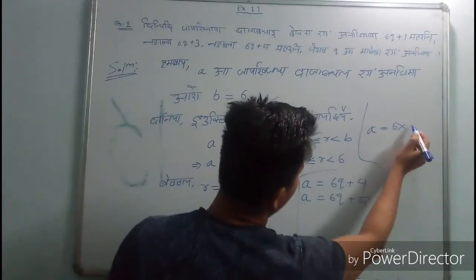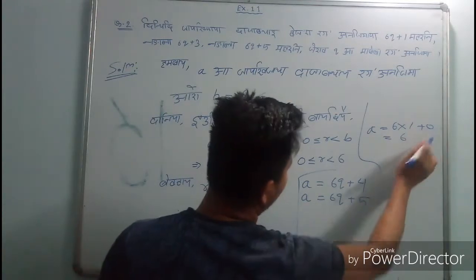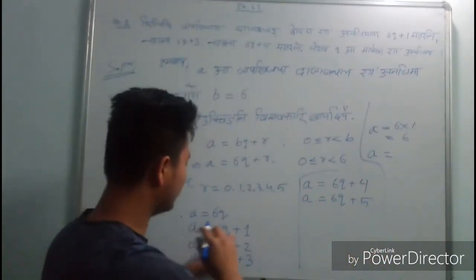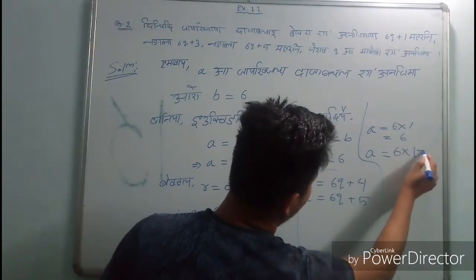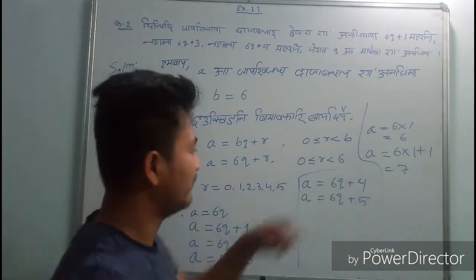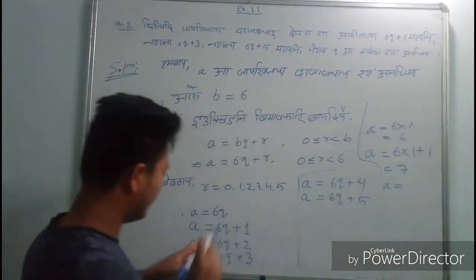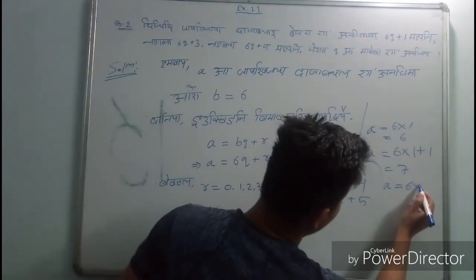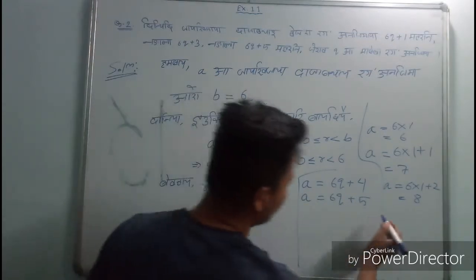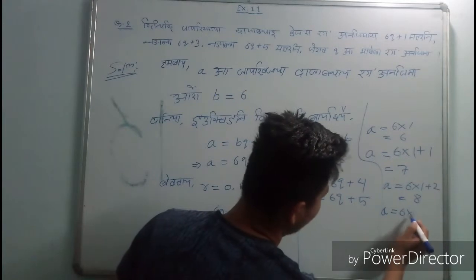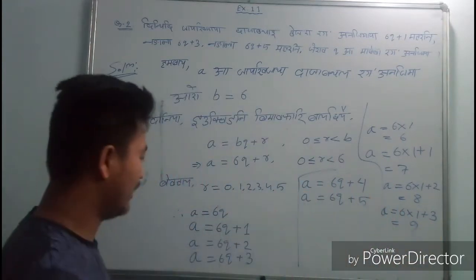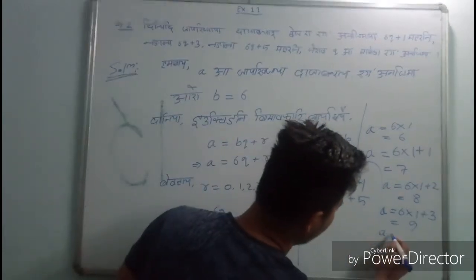So 6q is 6 into q. If we take 6q plus 2, we can factor this. We can write 6q plus 3. So a equals 6q plus 3.